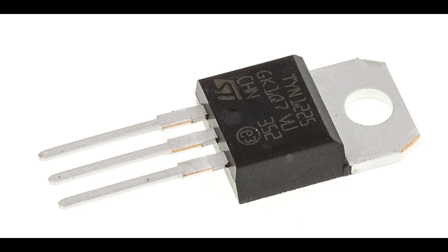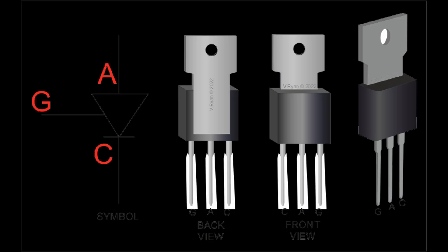Detailed layer structure: The P1 layer is the outermost layer made of P-type material, connected to the anode terminal. The N1 layer is next to the anode, made of N-type material, and forms the first PN junction J1 with the P1 layer. The P2 layer is the third layer made of P-type material, forms the second PN junction J2 with the N1 layer, and is connected to the gate terminal. The N2 layer is the innermost layer made of N-type material, forms the third PN junction J3 with the P2 layer, and is connected to the cathode terminal.